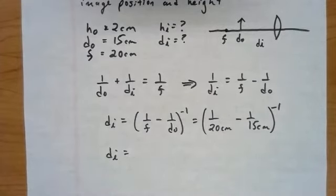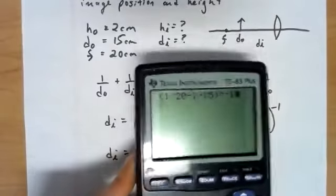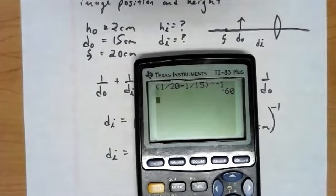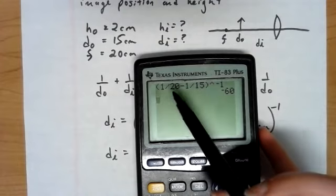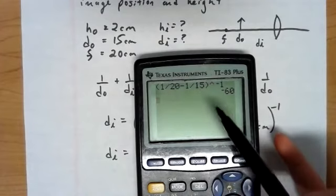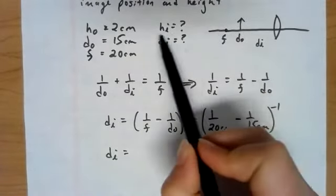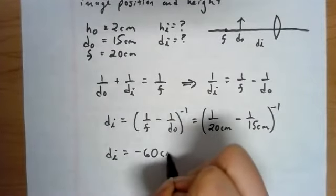Right. It should be negative, which means from our sign conventions, we're going to be looking at a virtual image on the same side as the lens. So we're going to expect DI to be somewhere over here. I'm not sure where, but we are going to do a calculator. So one over 20 minus one over 15, all raised to the negative first, get negative 60.